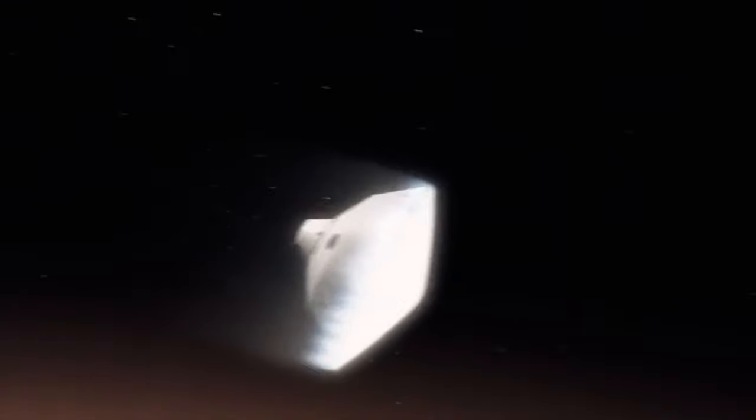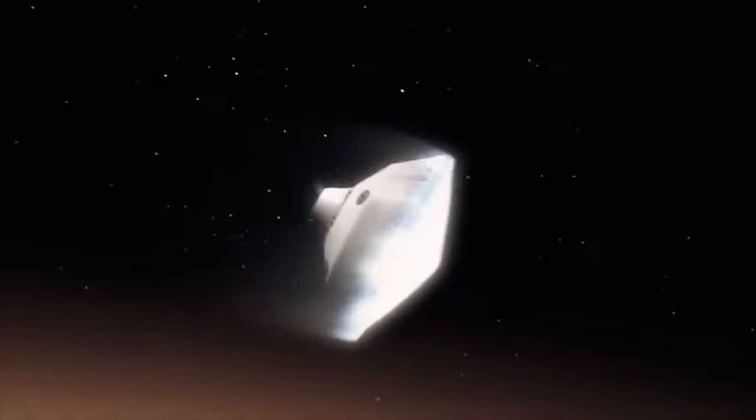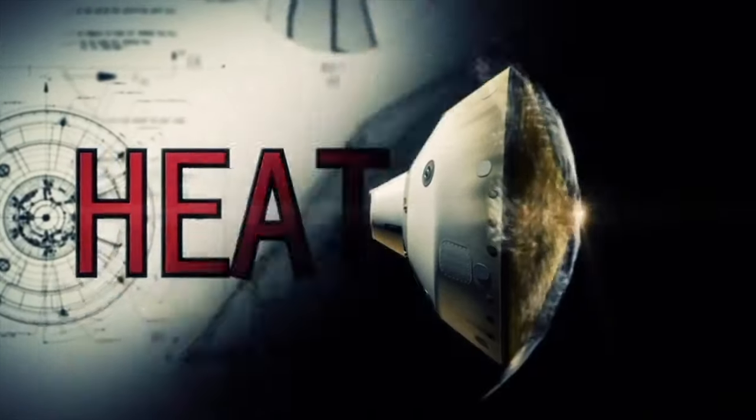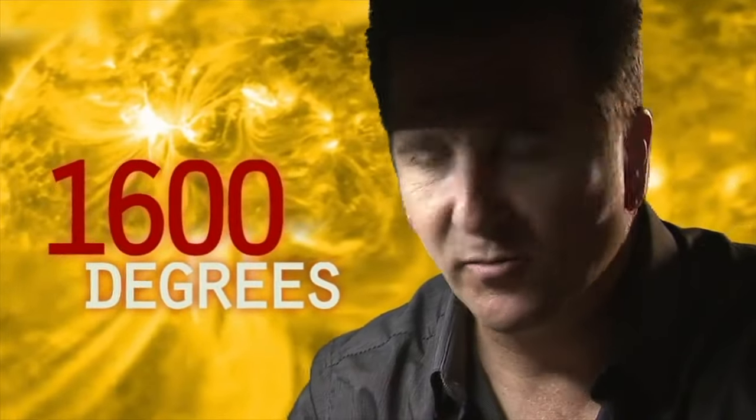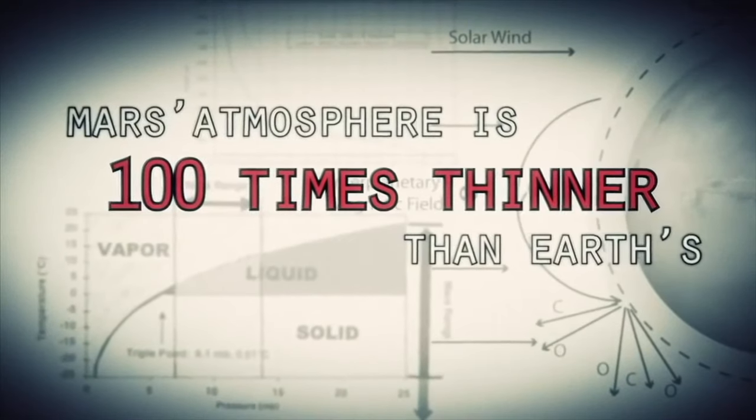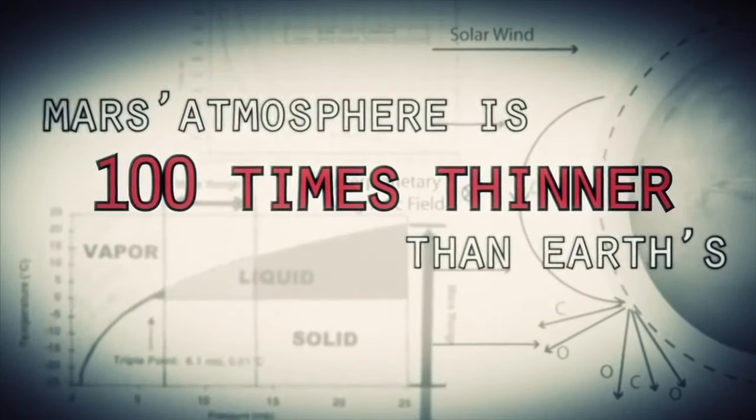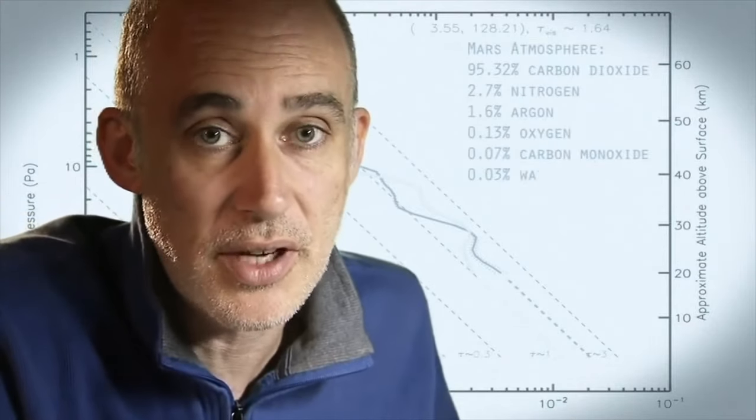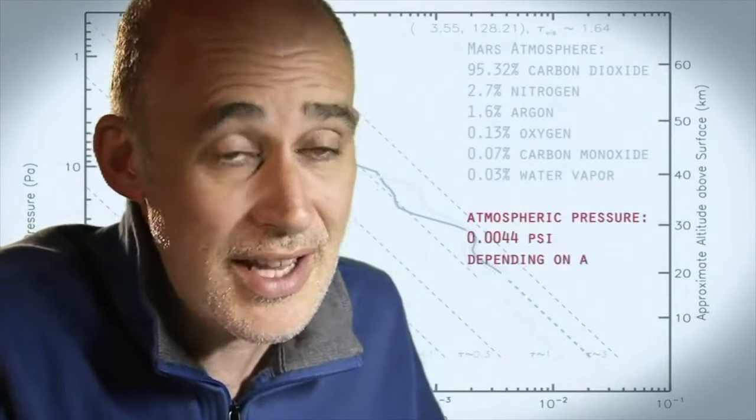We slam into the atmosphere and develop so much aerodynamic drag. Our heat shield heats up and glows like the surface of the Sun, 1600 degrees. Mars is actually really hard to slow down because it has just enough atmosphere that you have to deal with it, otherwise it will destroy your spacecraft. On the other hand, it doesn't have enough atmosphere to finish the job.